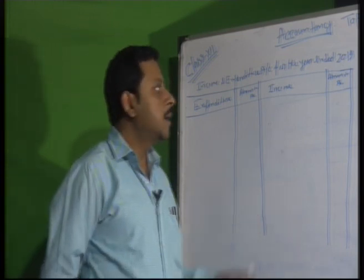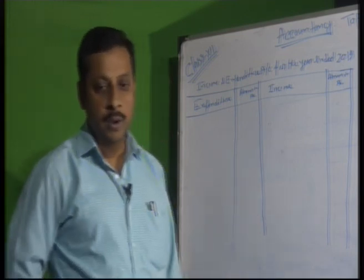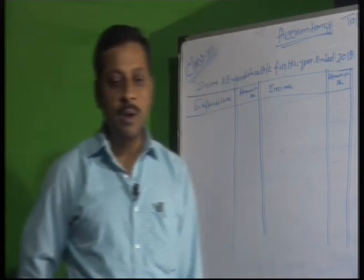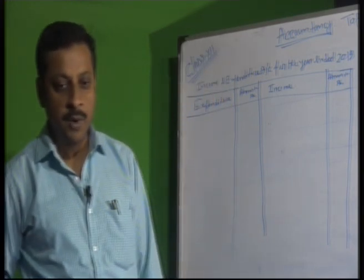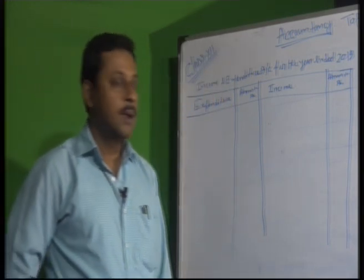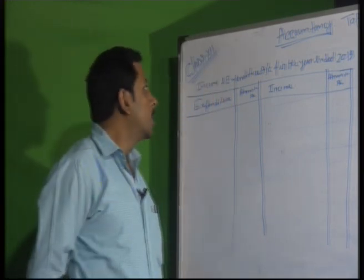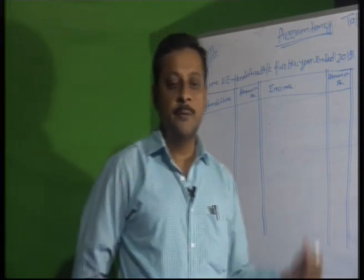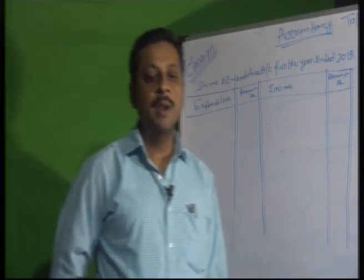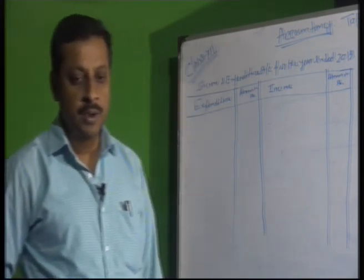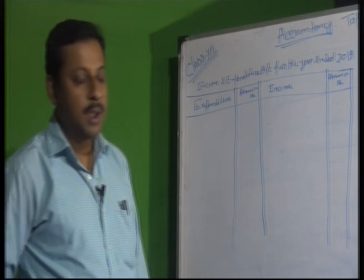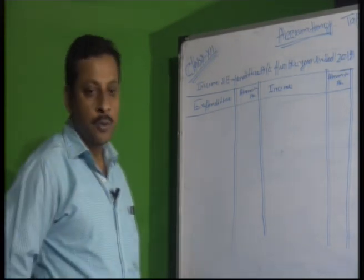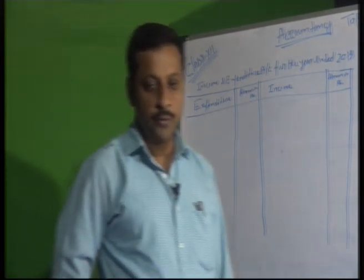Here you also do the same thing, just the name is changed but the work is the same. In trading and profit and loss account, the substitute is income and expenditure account, and balance sheet is also done the same way.